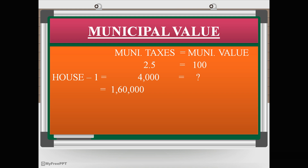In the same way, for house number 2, taxes are 5,000. So: 2.5 equals 100, and 5,000 equals how much? Calculate it. The answer is 2 lakhs. So finally, we have calculated municipal values of both houses. Now we are ready for Gross Annual Value.